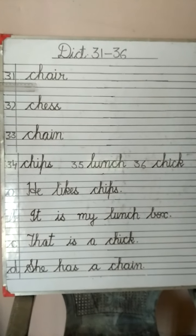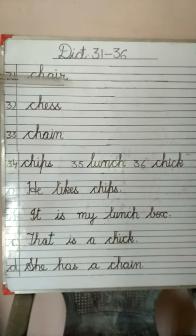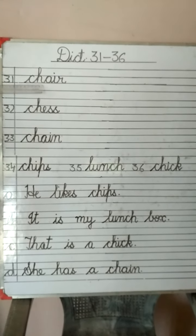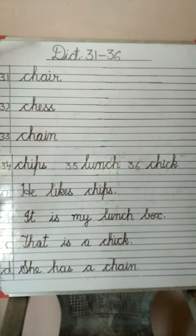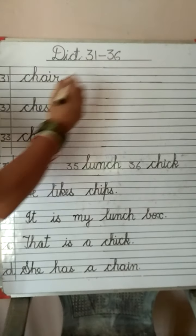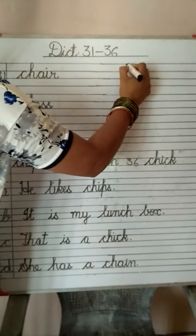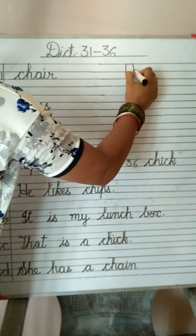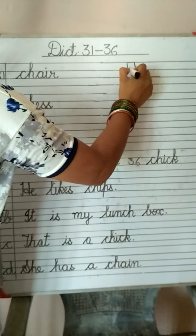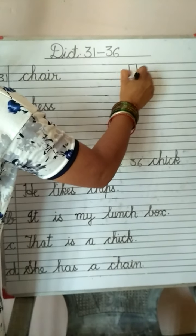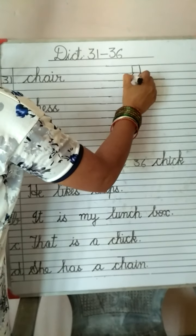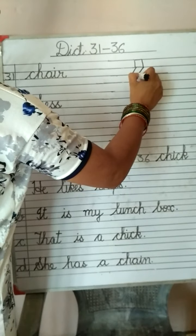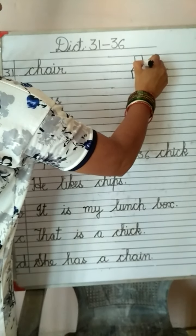First is C-H-A-I-R. Chair. C-H-A-I-R. Chair. For chair you will draw a small box, slanting lines in this way, then the legs of a chair.